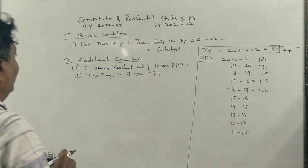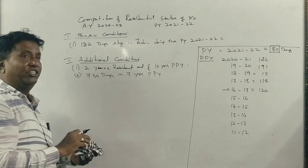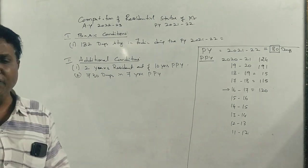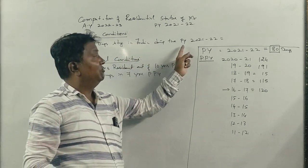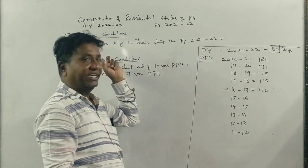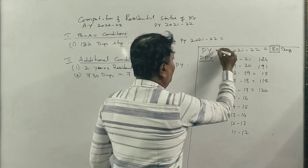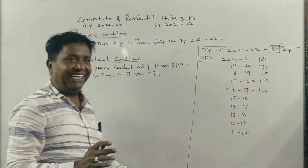Now, let's see whether he satisfied the conditions, the first basic condition or not. What is the first basic condition? 182 days stay in India for the previous year, 21-22. How many days? 182 days. But during the previous year, how many days he was there? Only 80 days.